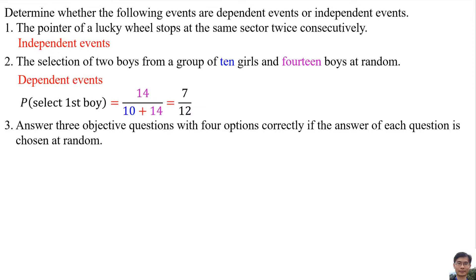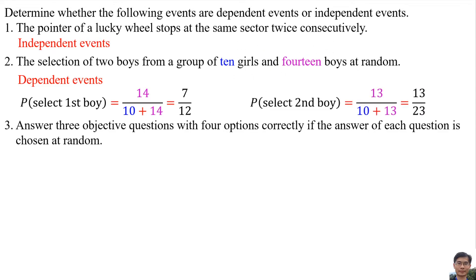The probability of selecting the first boy is 14 over (10 + 14), which equals 7 over 12. Here, 14 means 14 boys and 10 + 14 means 10 girls and 14 boys. The probability of selecting the second boy is 13 over (10 + 13), which equals 13 over 23. The 13 means after selecting the first boy, there are only 13 boys remaining.